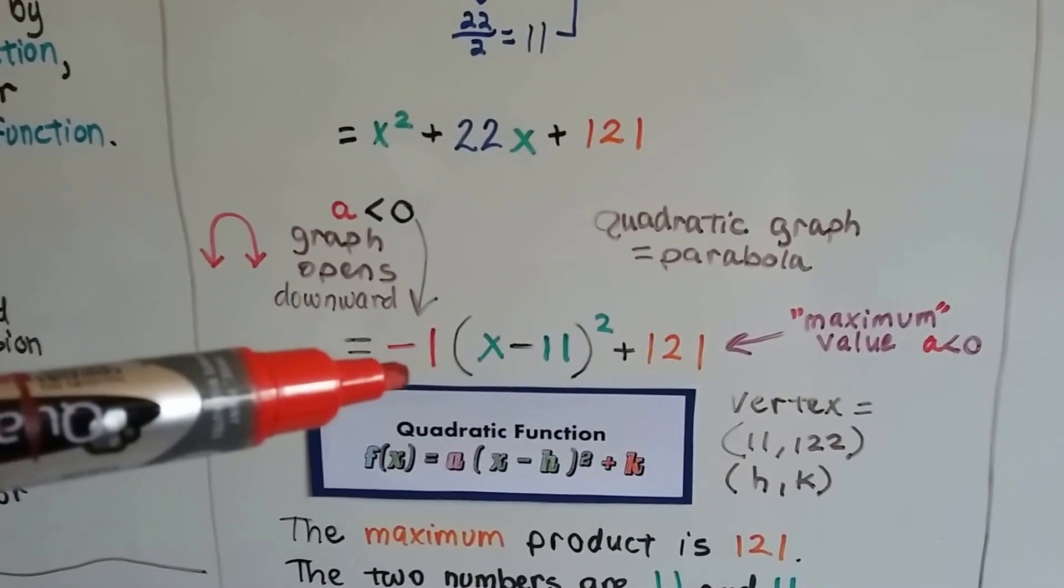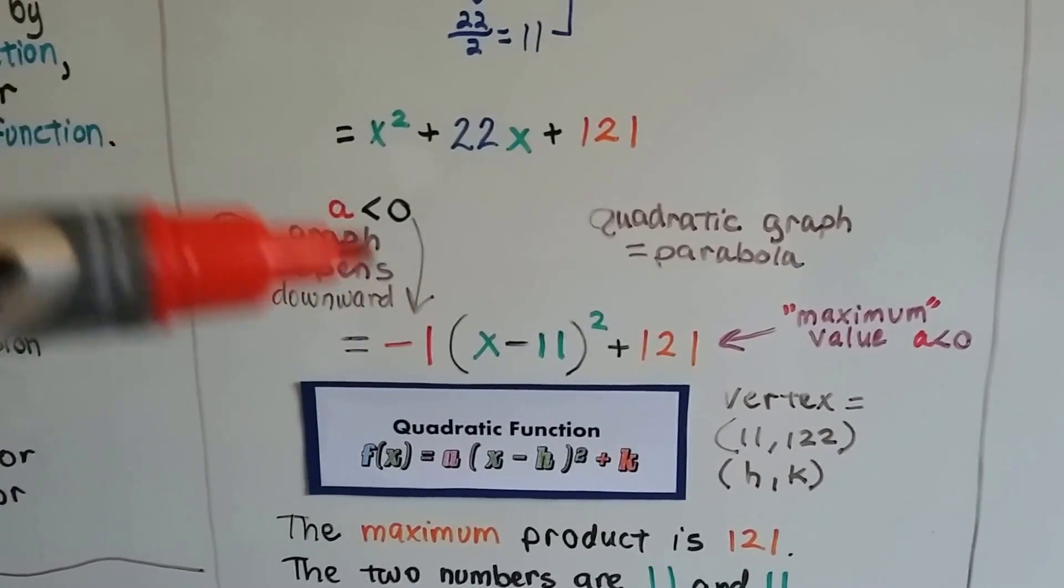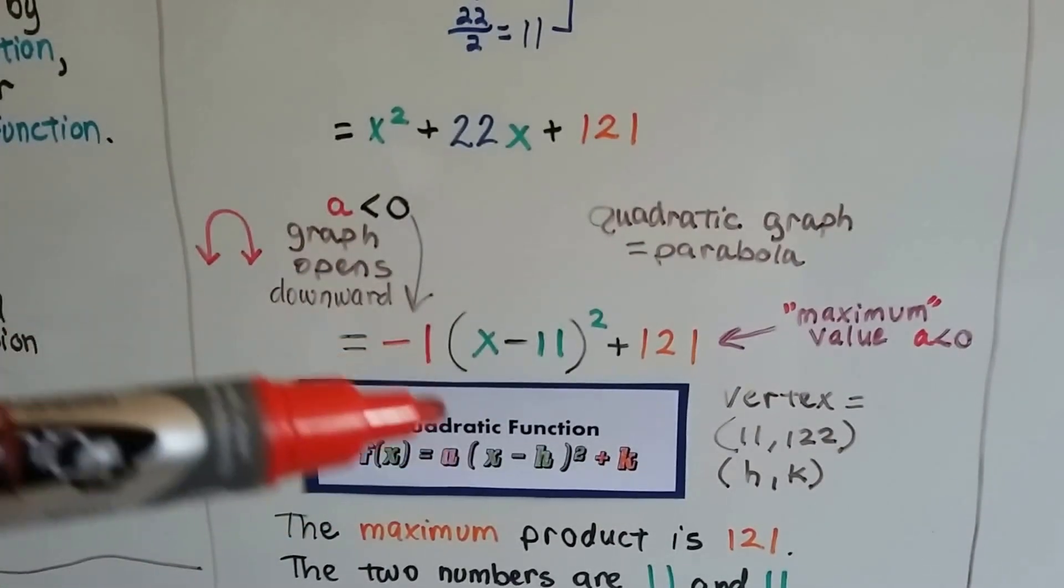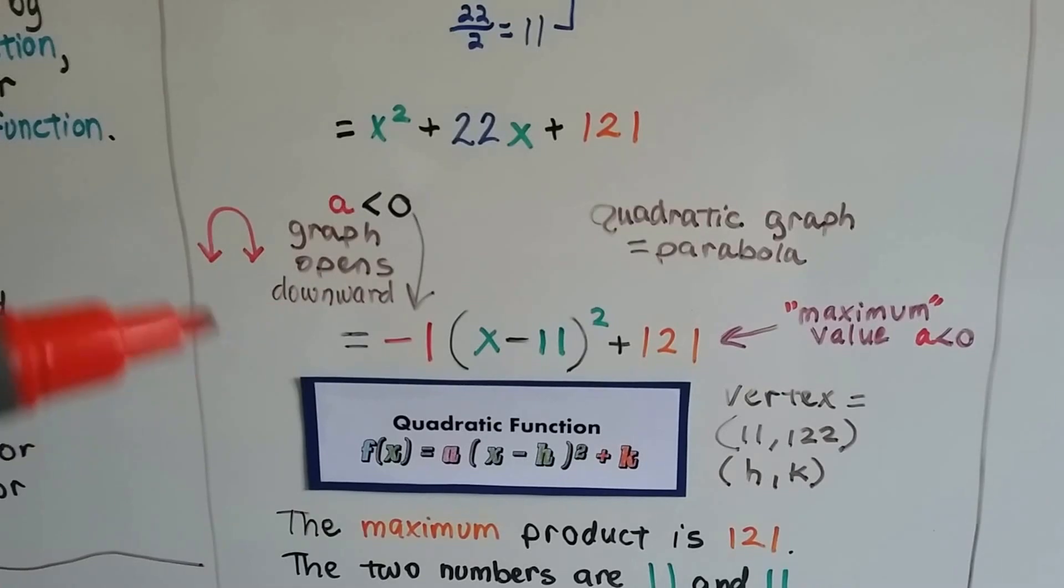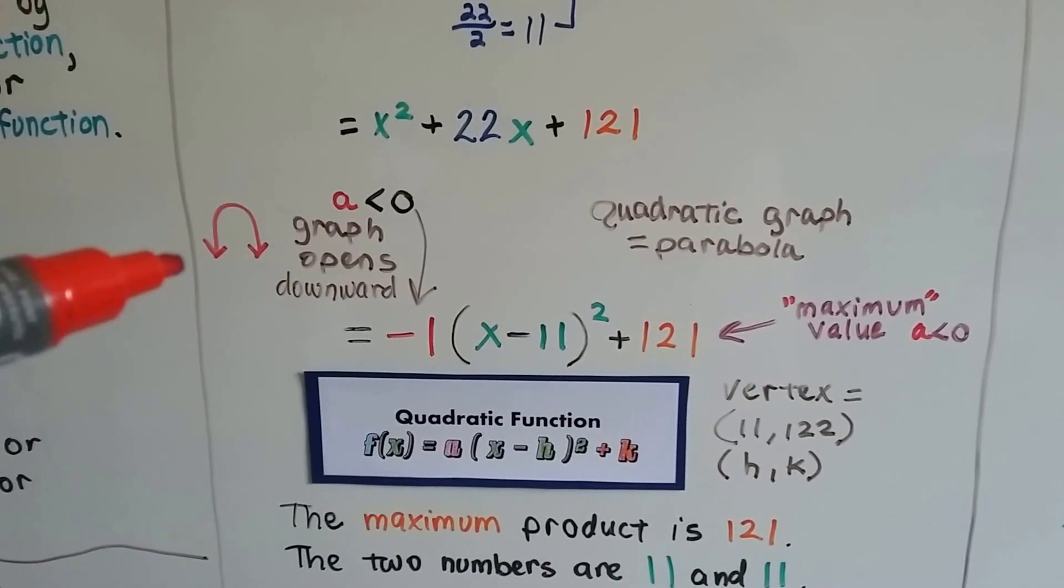Because that's a negative 1, that means this a value is less than 0, so our parabola is going to open downward.